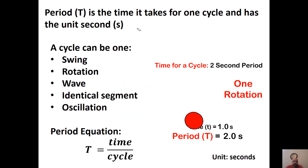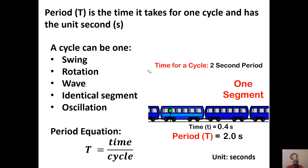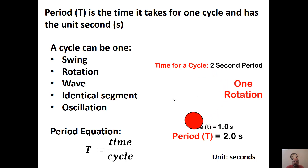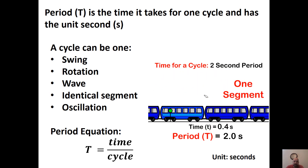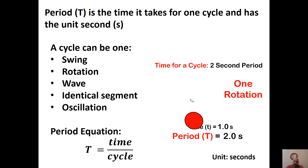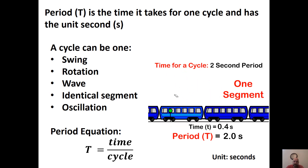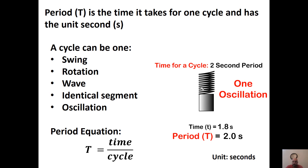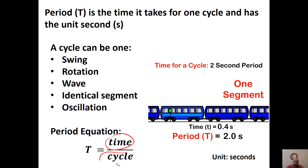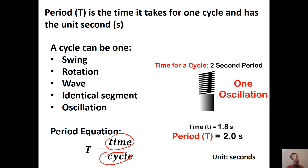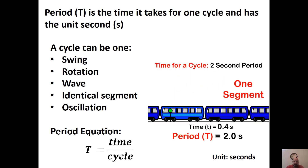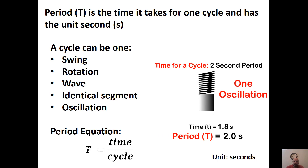Period sounds like time because it's in seconds, but it's something special. It's the time it takes to complete one cycle — one wave, one oscillation, one complete rotation. On this unit, one cycle means going around a circle once. If you had 50 cycles in 2 seconds, you could use that to figure out the period.